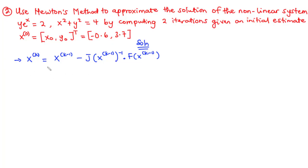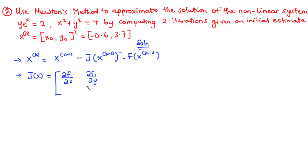After writing down the formula, the next thing we need to do is find the Jacobian matrix. Since we have two non-linear equations, we are going to obtain a two by two Jacobian matrix. The first row contains the partial derivatives of the first function with respect to x and y, and the second row contains the partial derivatives of the second function with respect to x and y.